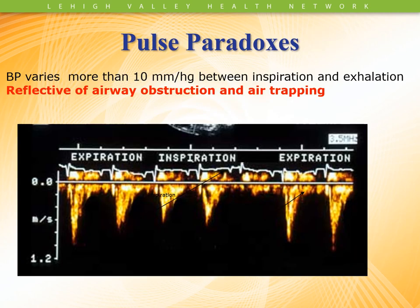Pulsus paradoxus shows that the blood pressure varies more than 10 mmHg between inspiration and exhalation and is very reflective of obstruction and air trapping. That's another ominous sign in status asthmaticus when the patient develops a pulsus paradoxus. I don't care what the auto-PEEP says on the ventilator or what you might see on the X-ray — the patient definitely has a tremendous amount of auto-PEEP. If not corrected soon, the patient won't die of respiratory decompensation — they'll have a hemodynamic event that will lead to their demise.